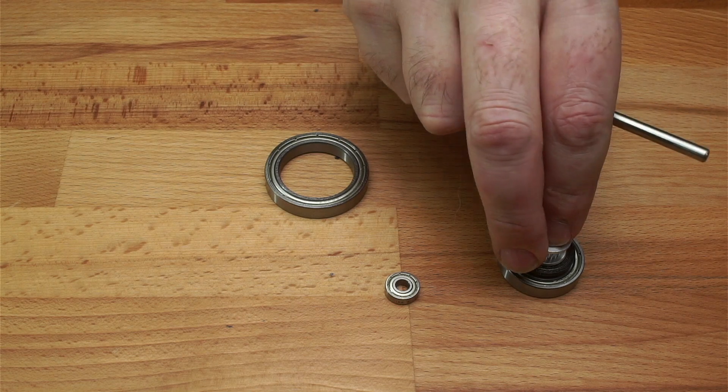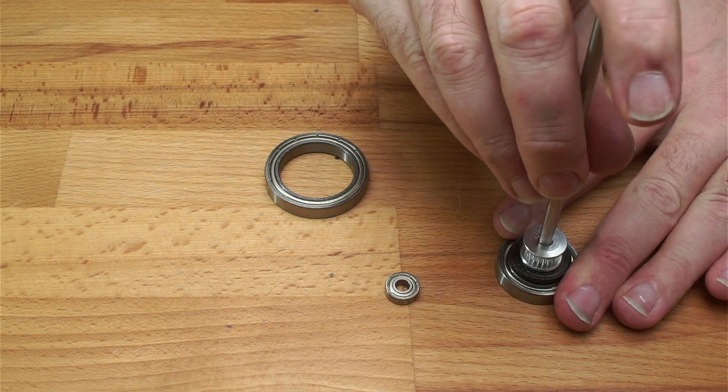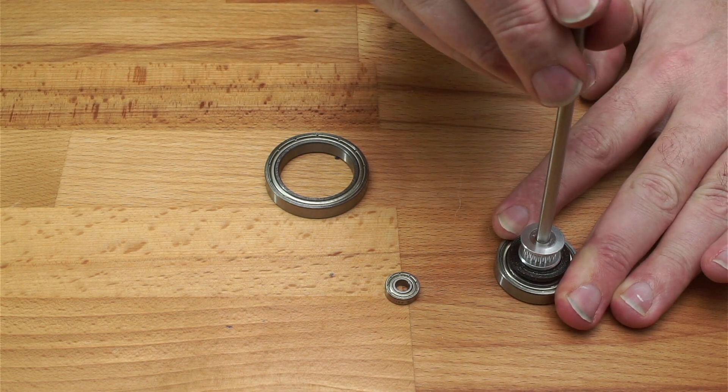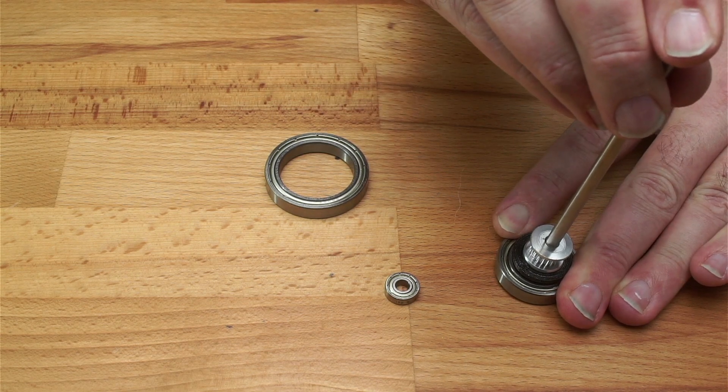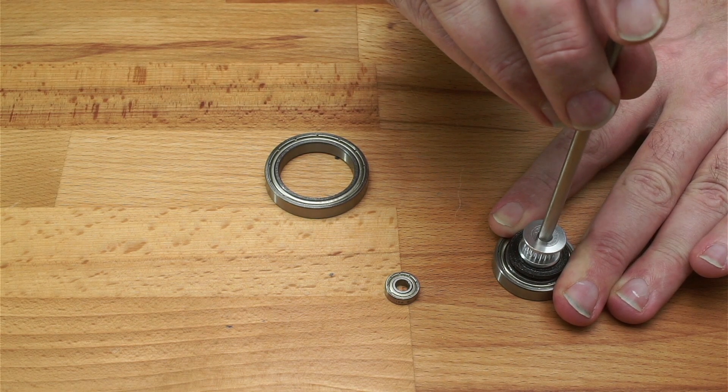However, if we take this bearing with a 32mm outside diameter and rig up some random stuff to hold the same rod, you can see that it takes a lot less force to stop the rod moving.